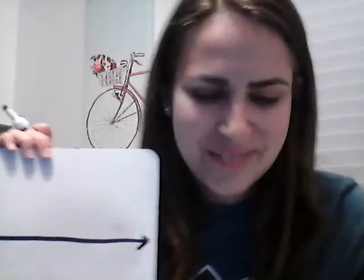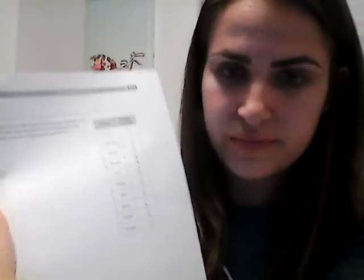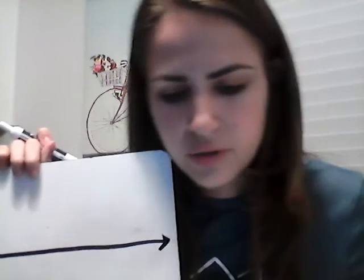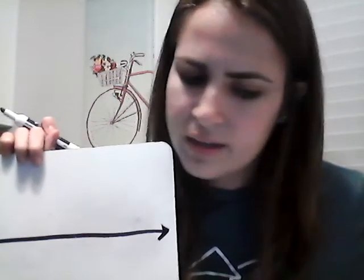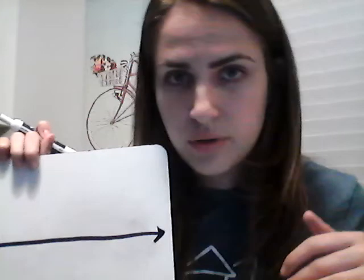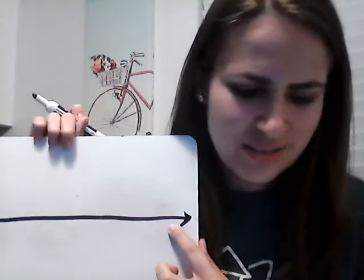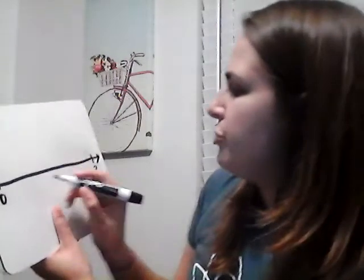Hopefully you paused the video. We notice that 5 eighths is the smallest fraction — it's less than 1, so we can't start our number line at 1; we have to start it at 0. The rest of our fractions are mixed fractions: 2 and 1 half, 1 and 3 fourths, 2 and 1 eighth, and so on. We have fractions greater than 2 but none greater than 3. If we ended the number line at 2, we wouldn't be able to mark a lot of our data, so we'll make the end of our number line 3.